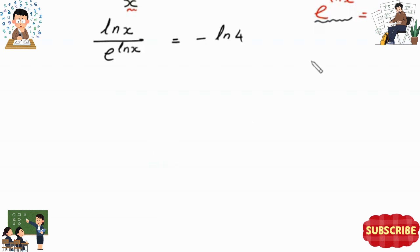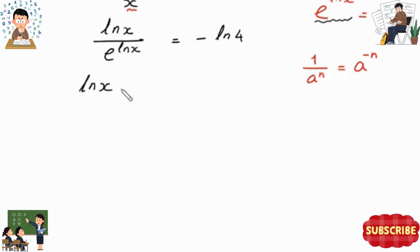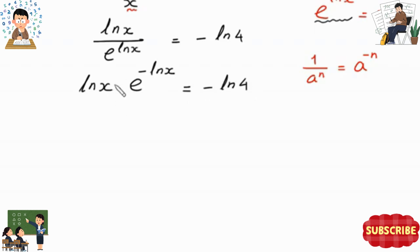Using the property of exponents, 1 over a to the power n equals a to the power negative n, we rewrite ln of x over e to the power ln of x as ln of x times e to the power negative ln of x equals negative ln of 4.